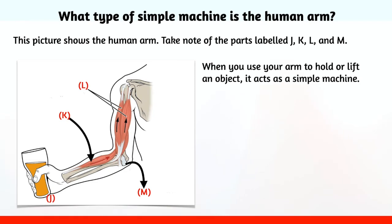When you use your arm to hold and lift an object, it acts as a simple machine. The load is the object that you are holding or lifting.